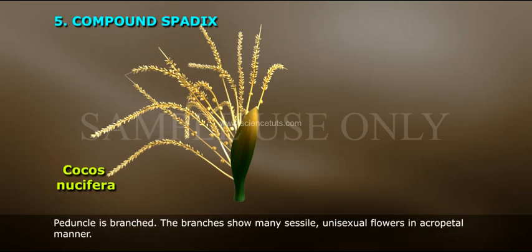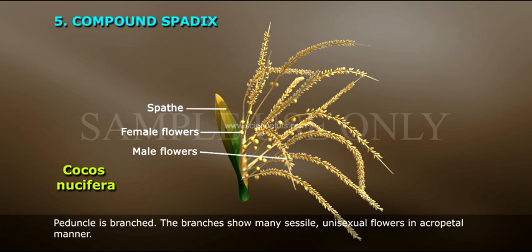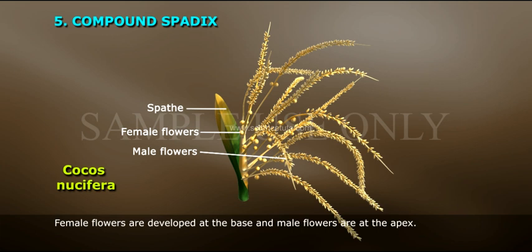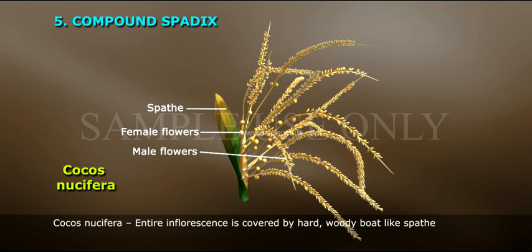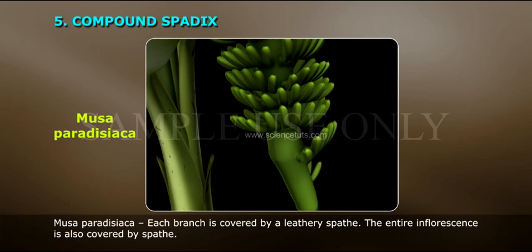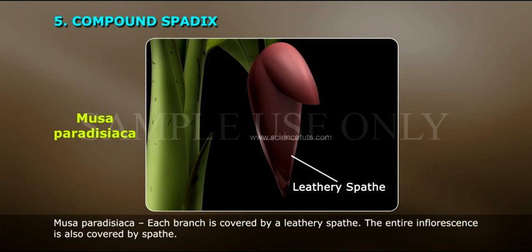Compound spadex: The peduncle is branched. The branches show many sessile, unisexual flowers in an acropetal manner. Female flowers are developed at the base and male flowers are at the apex. Example: Cocos nucifera — the entire inflorescence is covered by a hard, woody board-like spathe. Musa paradisiaca — each branch is covered by a leathery spathe, and the entire inflorescence is also covered by a spathe.